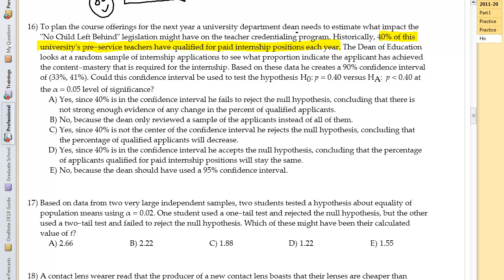So this is sort of our null hypothesis. The dean of education looks at a random sample of the internship applications to see what proportion indicate the applicant has achieved the content mastery required for the internship. Based on these data, he creates a 90% confidence interval of 33 to 41. Could this confidence interval be used to test the hypothesis that P equals 40 versus P less than 40 at the 0.05 level of significance? Now, usually what we would think is that with a 90% confidence interval, we would be looking at a 0.10.